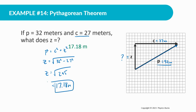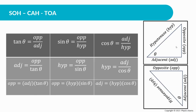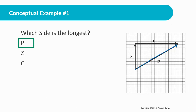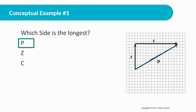Let's look at a conceptual example: which side is the longest? The side that's angled is going to be the longest — that is the hypotenuse. Thanks for watching, guys. Next time we're going to be talking about SOH-CAH-TOA, which might be familiar but we'll take it slow and make sure it makes sense. See you next time.